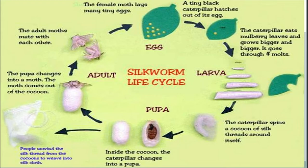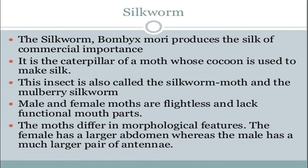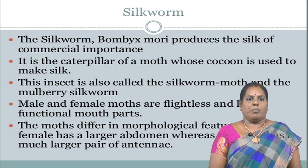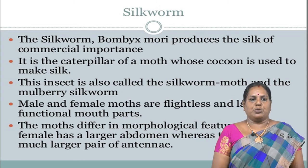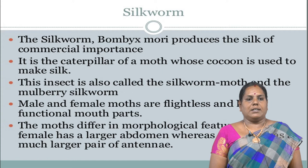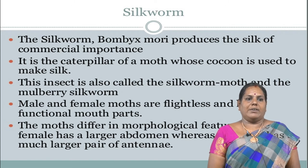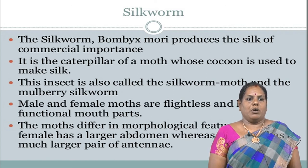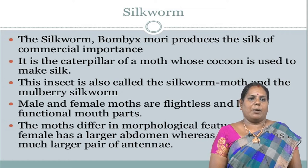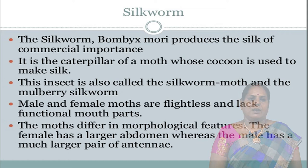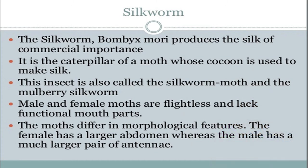The silkworm, Bombyx mori, produces silk of commercial importance. It is the caterpillar of a moth whose cocoon is used to make silk. This insect is also called the silkworm moth and the mulberry silkworm. The moths differ in morphological features — the female has a larger abdomen, whereas the male has a much larger pair of antennae.